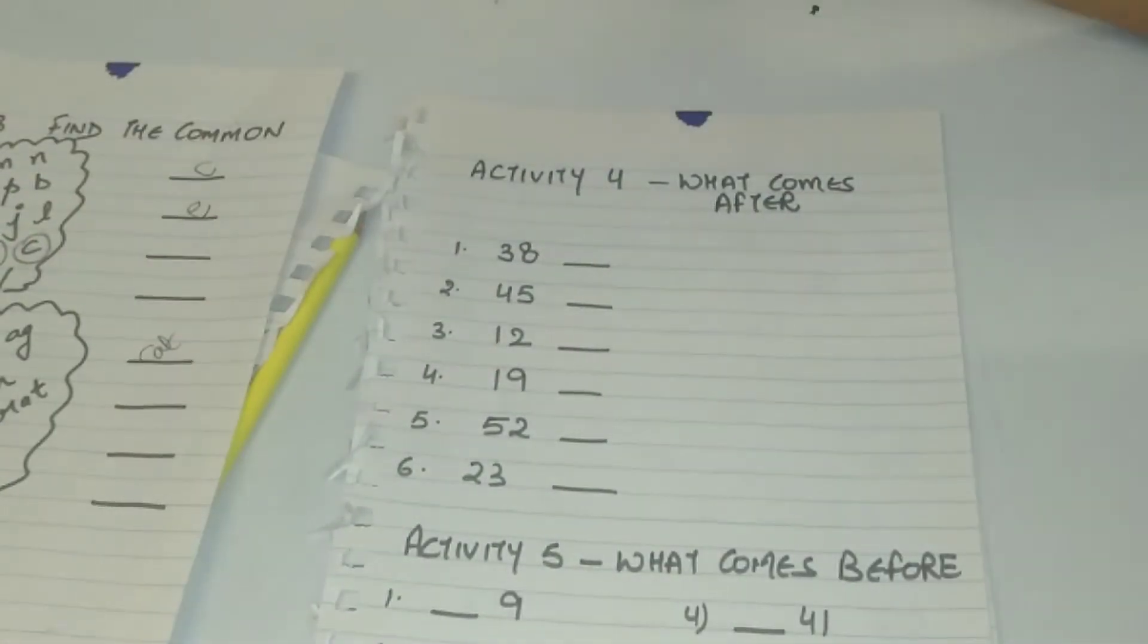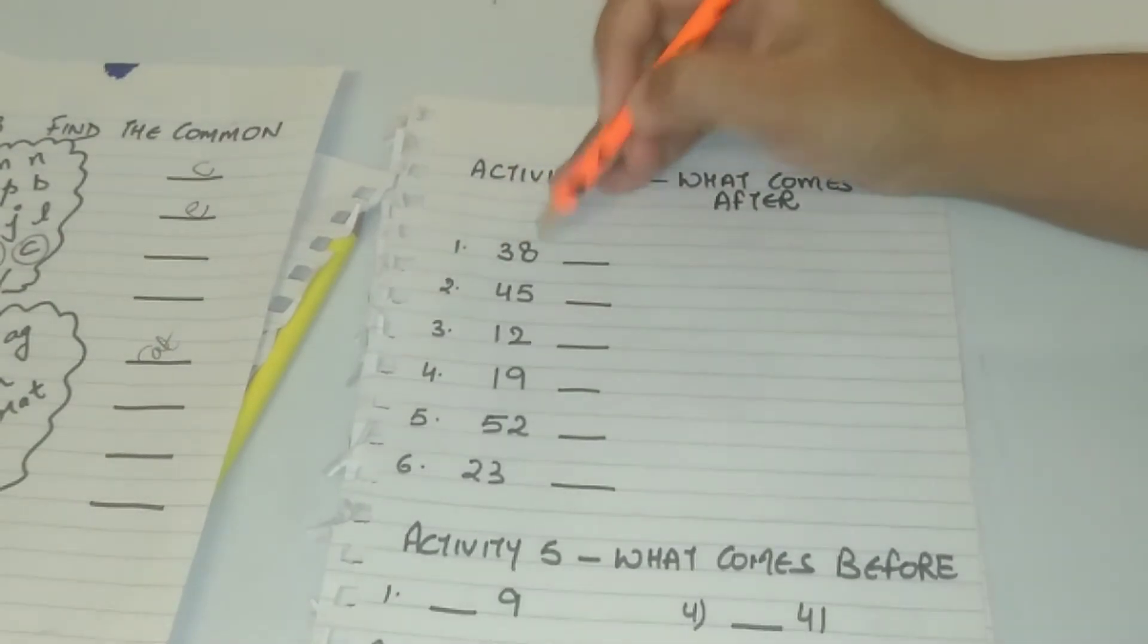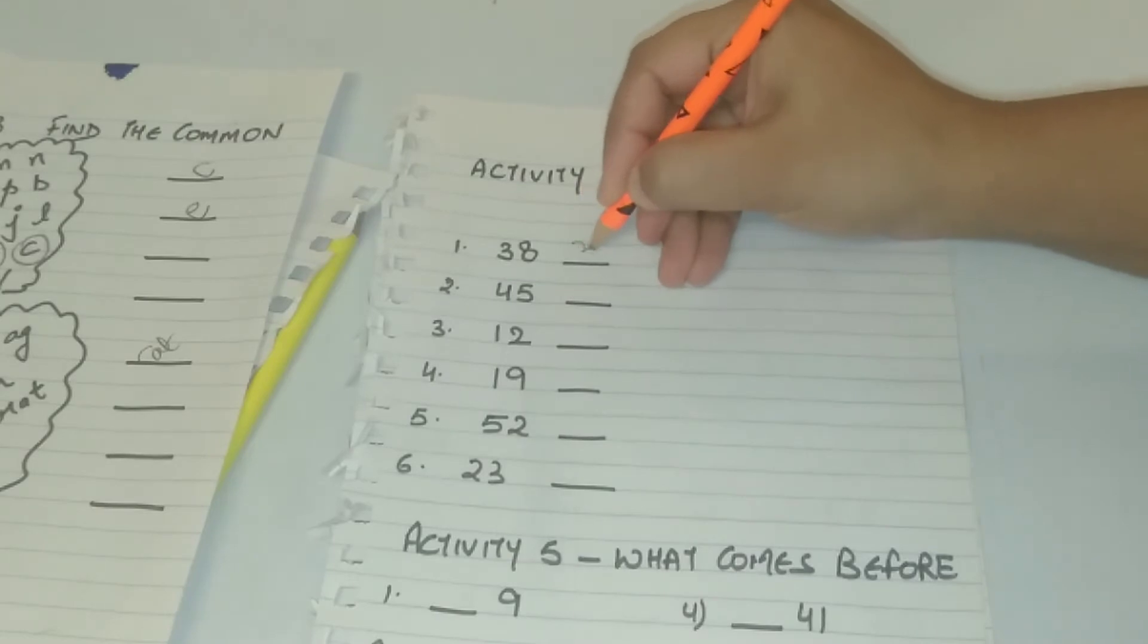The next activity is what comes after. Put some numbers and just put a dash and ask your kid what comes after.